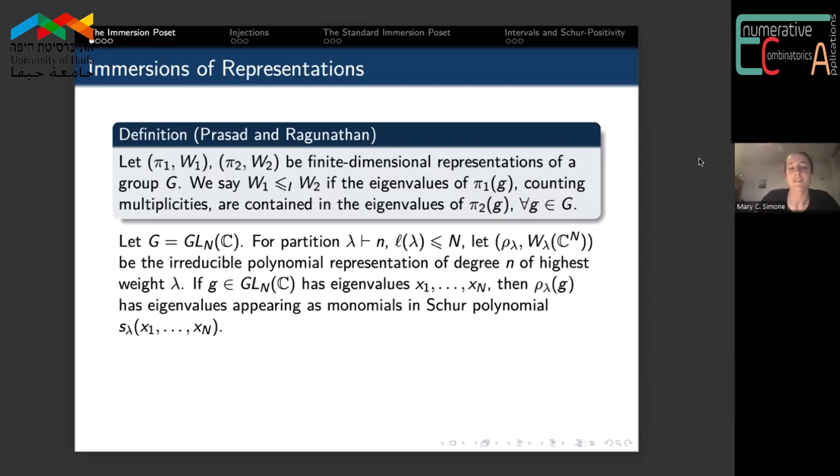It's a fact that if an invertible matrix has eigenvalues x1 up to xn, then the eigenvalues of its corresponding Weyl module action appear as monomials in the Schur polynomial sλ. So the Weyl module indexed by λ is immersed in the Weyl module indexed by μ if and only if the difference of these two Schur polynomials is monomial positive.